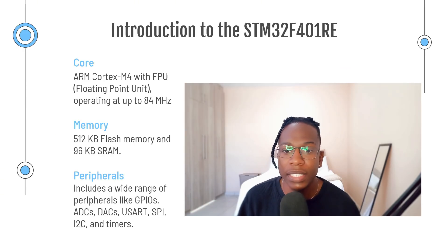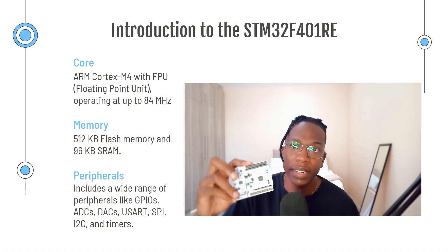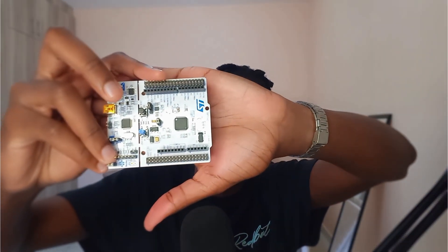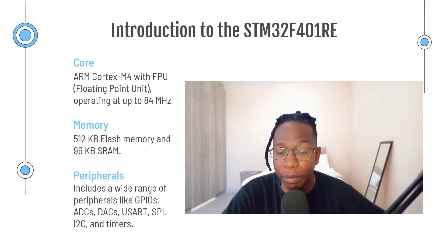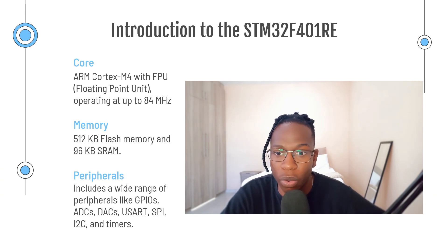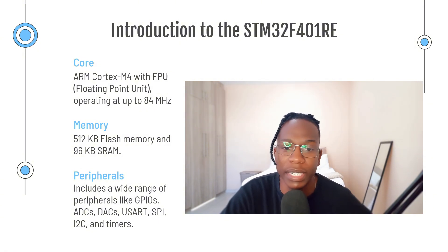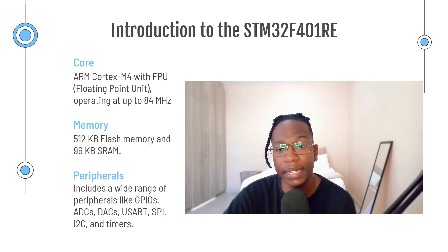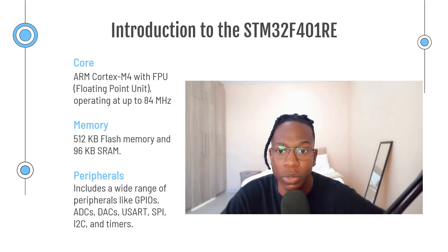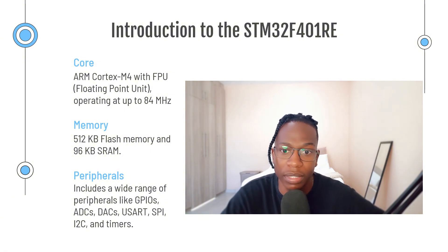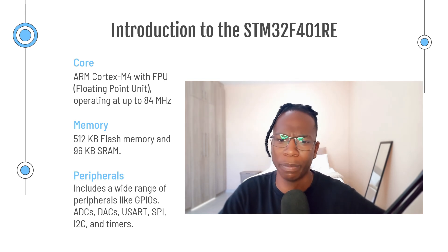Now let's talk about the STM32F411RE, which is the star of our series. This development board is from STMicroelectronics and is based on the ARM Cortex-M4 core. It is known for its balance between power efficiency and performance, making it a popular choice for both beginners and professionals. The STM32F411RE operates at speeds up to 84 MHz, has 512 kilobytes of flash memory, and 96 kilobytes of SRAM.